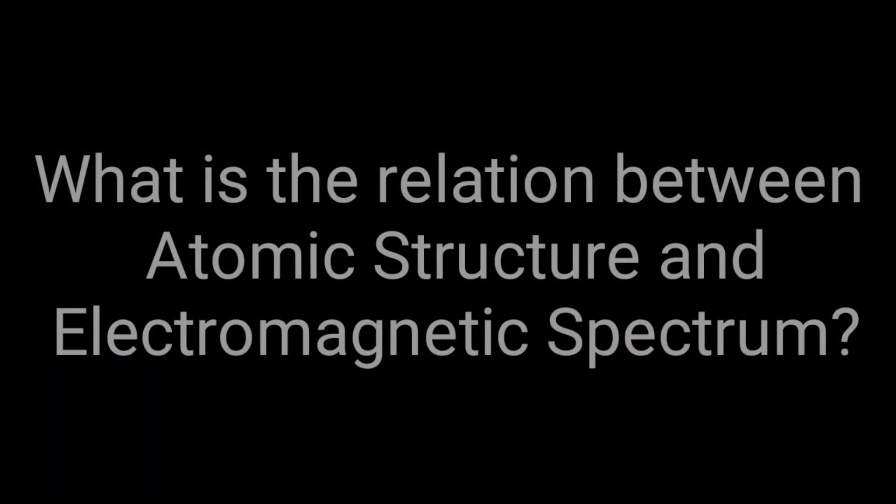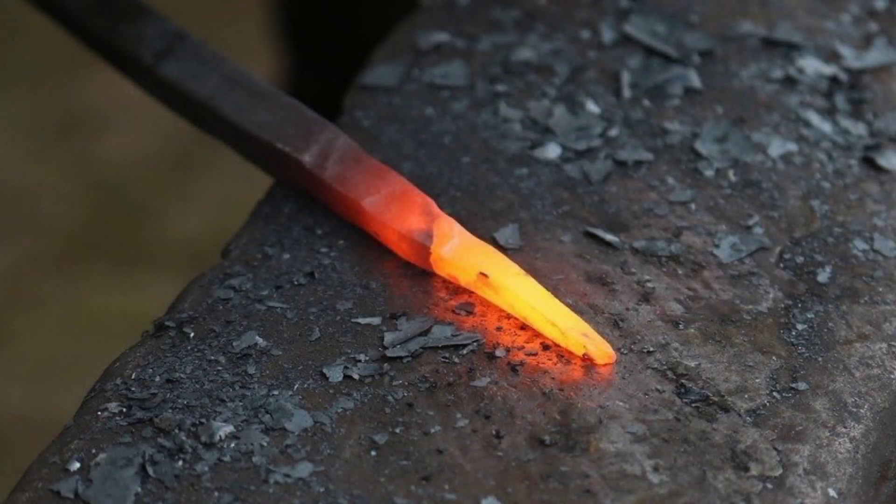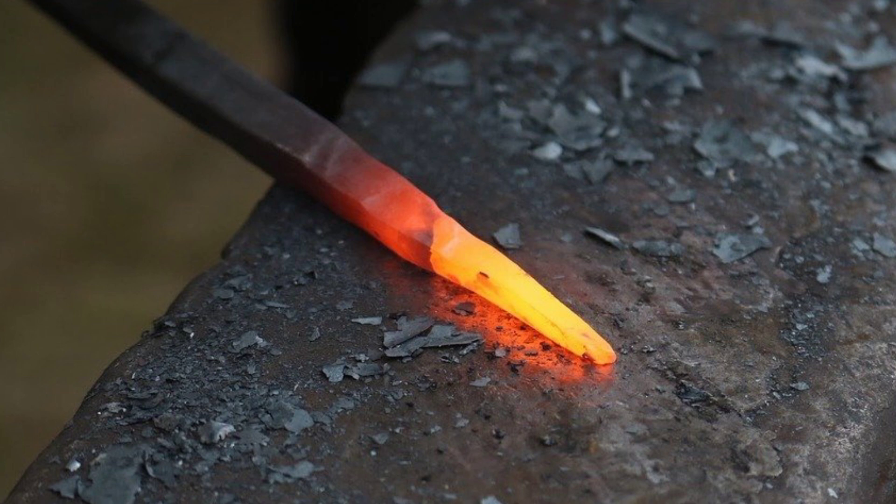What is the relation between atomic structure and electromagnetic spectrum? To know this, let us see some examples. When you heat an iron rod, some of the heat energy is emitted as light. First, it turns red.